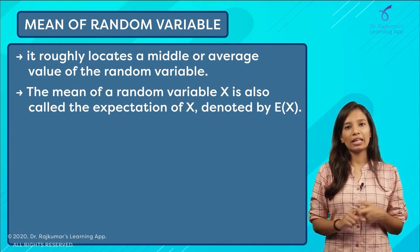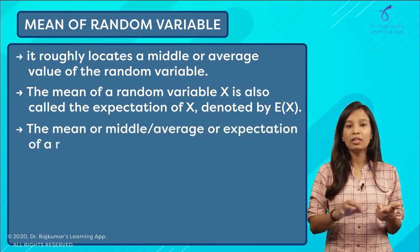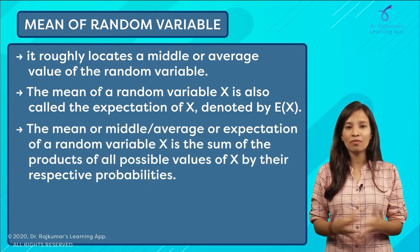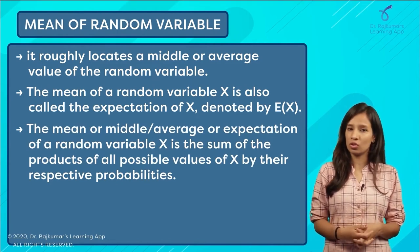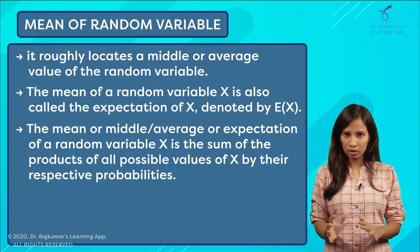In your question, they can ask you to find the mean of your random variable, the middle or average value, or the expectation value of this random variable. All these mean the same thing. You will have to do the summation of the product of your x values with your probabilities.